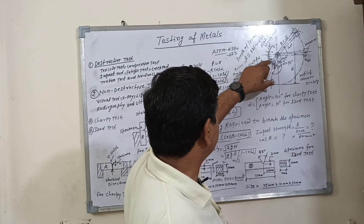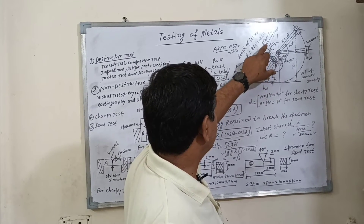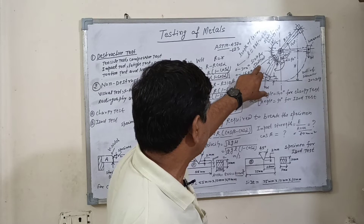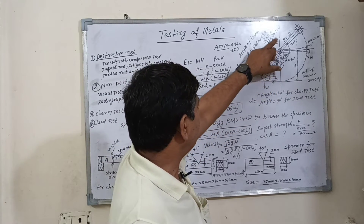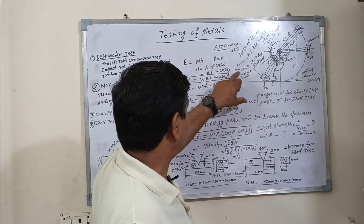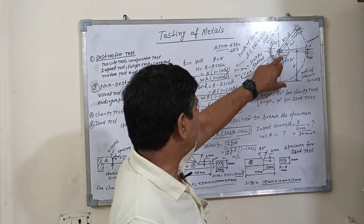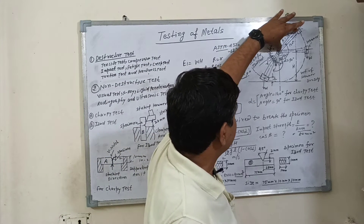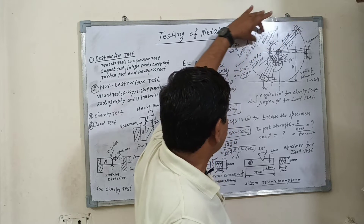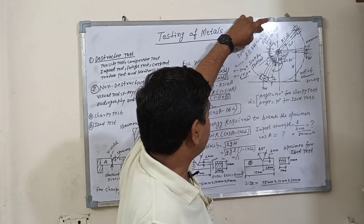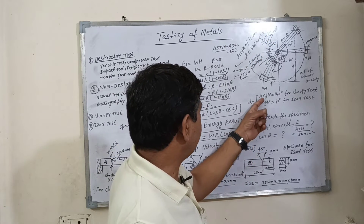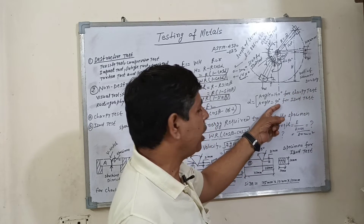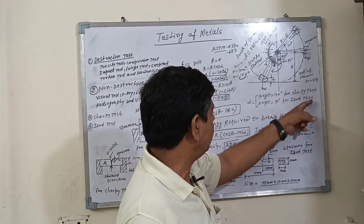The outer scale is used for the Charpy test — ranging from 0 to 300. The inner scale is used for the Izod test — ranging from 0 to 169. The arm length (radius) of the striking hammer is 825 to 830 mm. Alpha is equal to 140 degrees for the Charpy test, and 85 to 90 degrees for the Izod test.